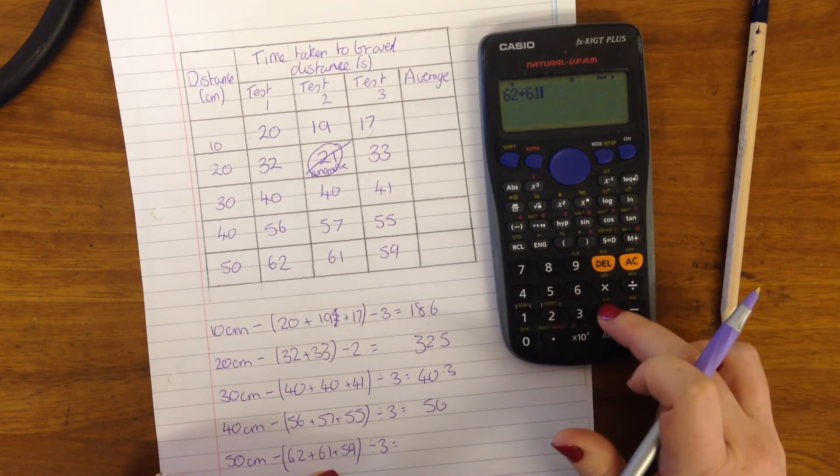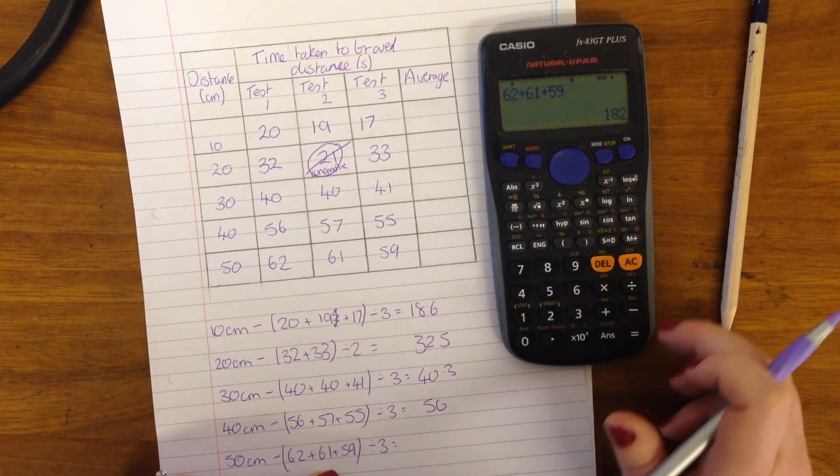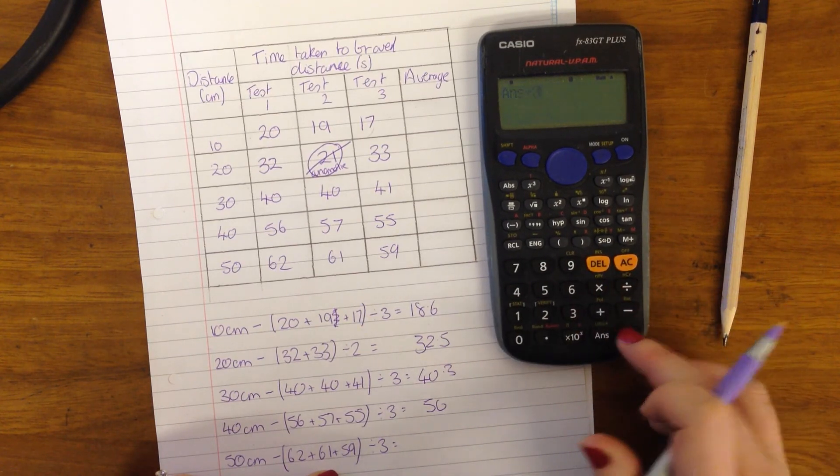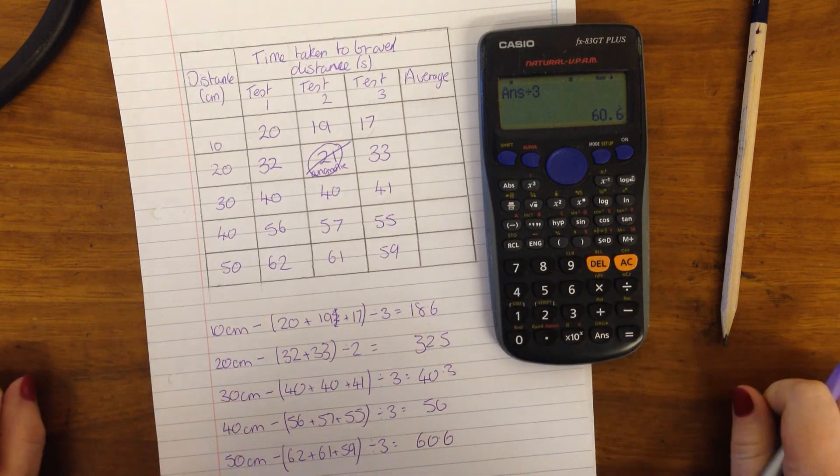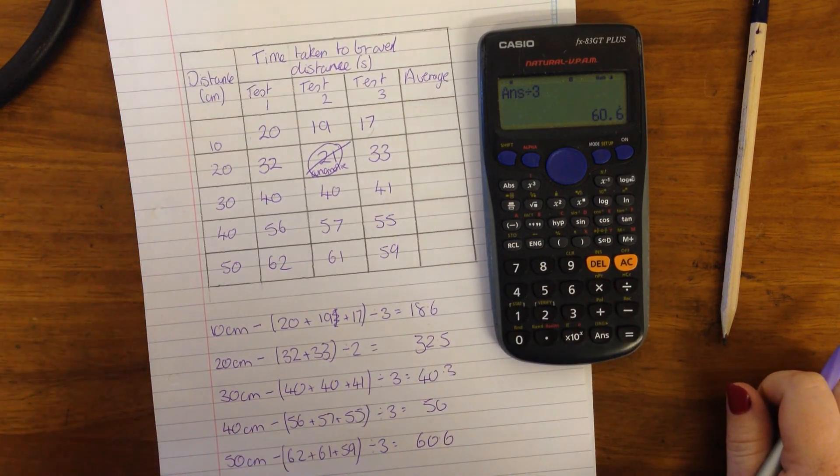62 plus 61 plus 59. Hitting that equals. Divided by 3 equals 60.6. OK, in the next video, I'll show you how to draw the graph.